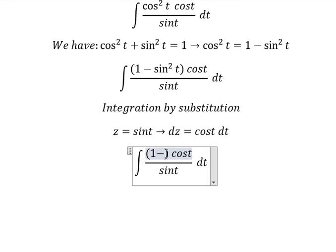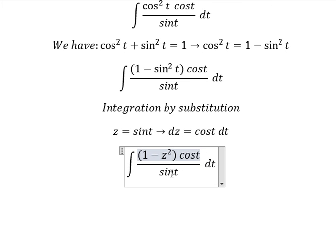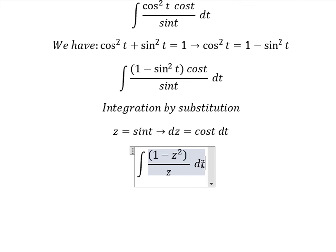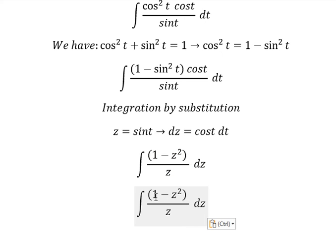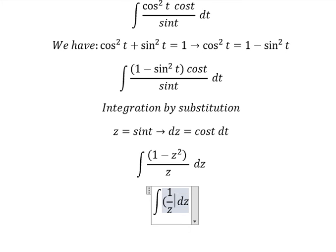This one we change by z, this one by z, and cos t dt we change by dz. Now we have 1 divided by z, z squared divided by z, so we have 1 over z minus z.